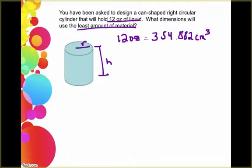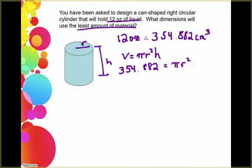Well the 12 ounces is my volume and we know that the volume of a cylinder is found by using pi r squared h. So we can substitute in that the volume is 354.882 and that's going to be equal to pi r squared h.